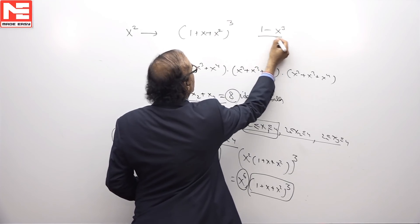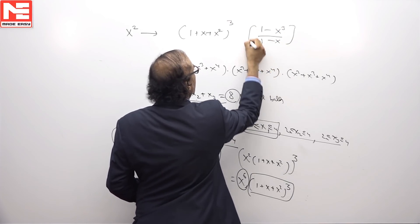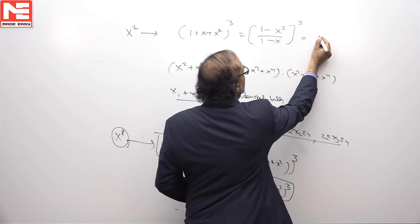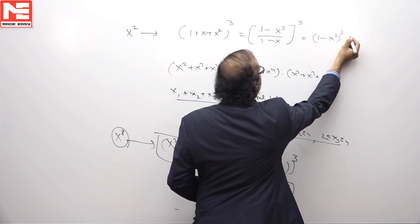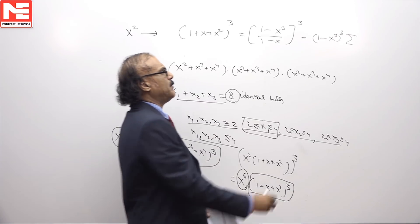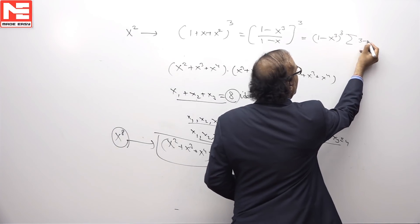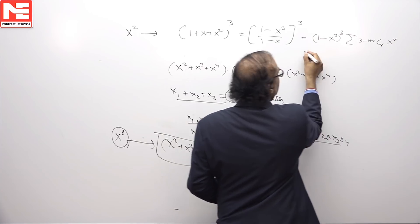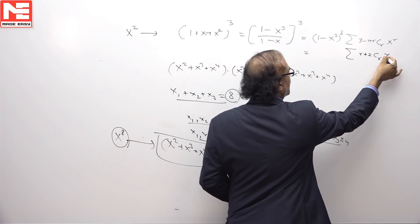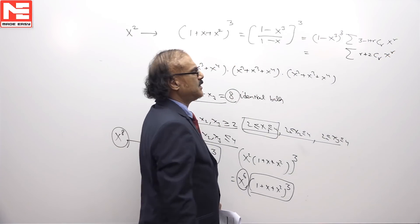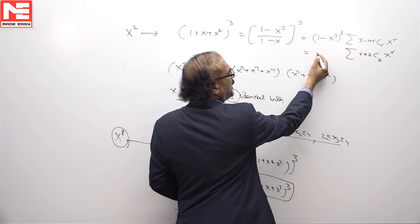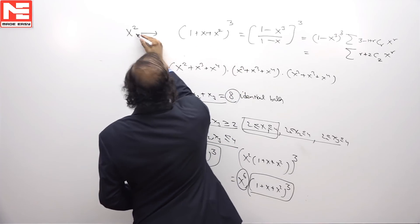This will be 1 minus x cube upon 1 minus x whole cube which is 1 minus x cube whole cube into summation of 1 upon 1 minus x whole cube can be brought up as 3 minus 1 plus r c r x power r which we can get this as r plus 2 c r x power r which is r plus 2 c 2 x power r. And this if you expand it we need to only take those terms which will make x square.